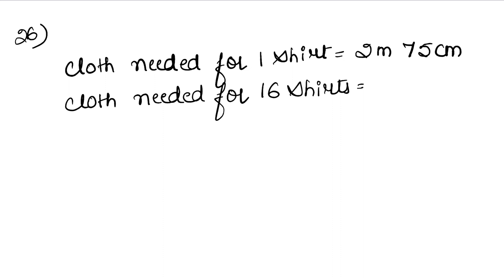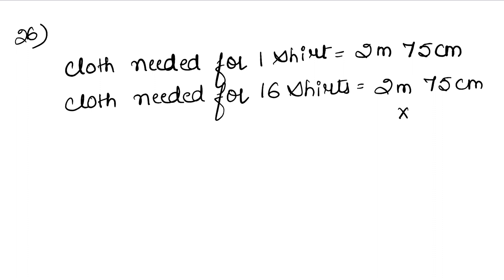We have the length of cloth for one shirt, and we need to find it for more shirts. So what do we do? Multiplication. We multiply two meters 75 centimeters by 16.